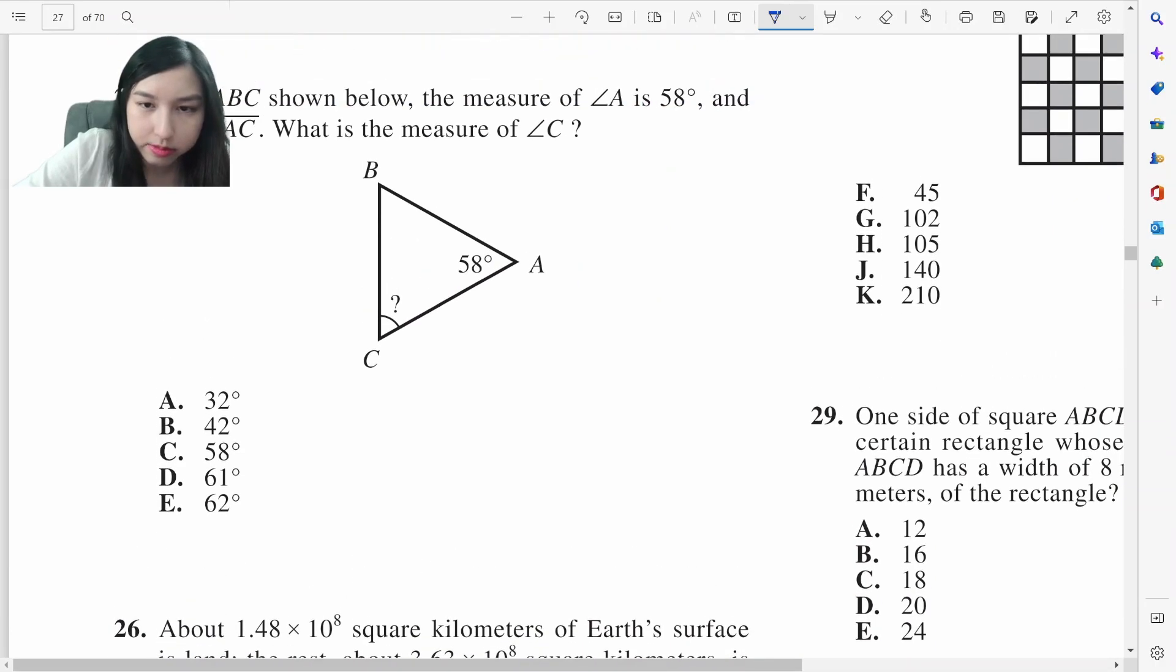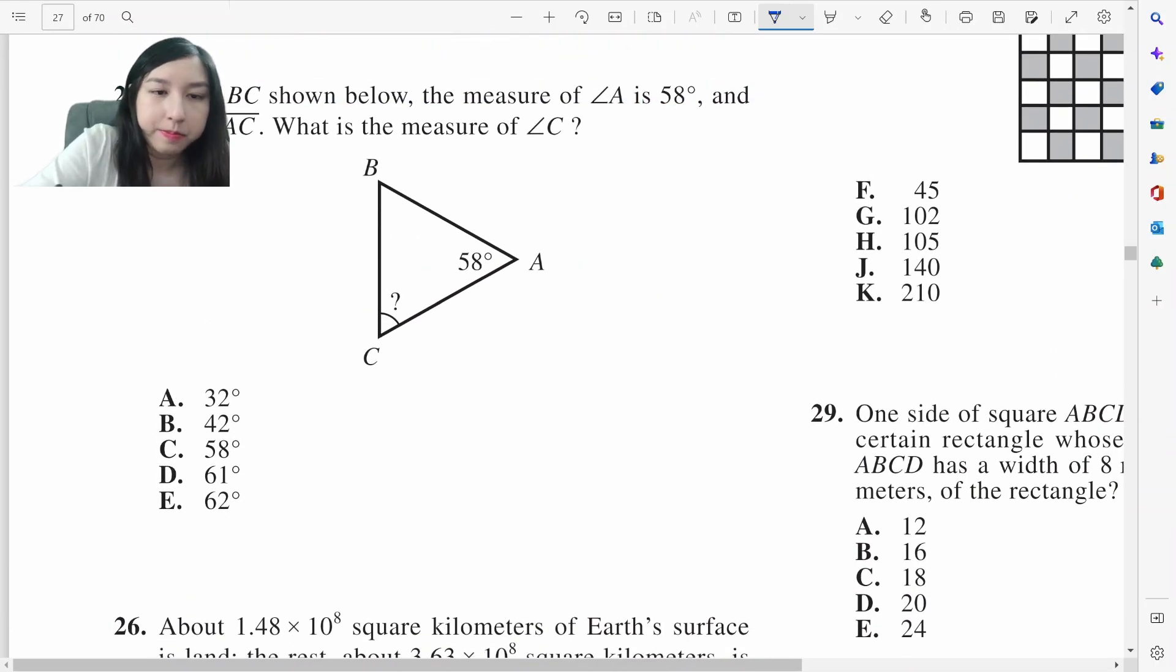Angle A is 58. AB is congruent to AC. So we're doing 108 minus 58 divided by 2 which is 122 over 2 which is 61.